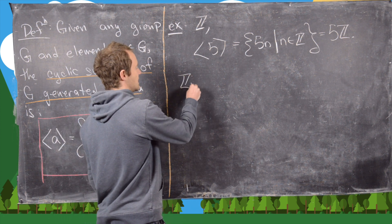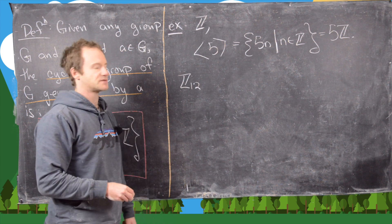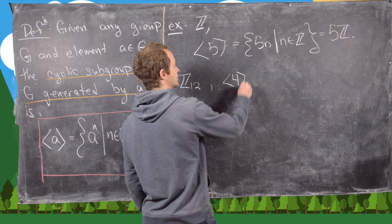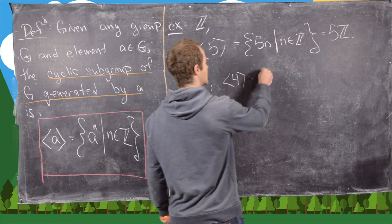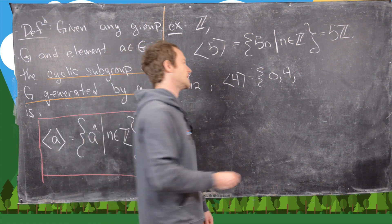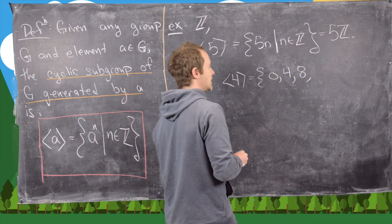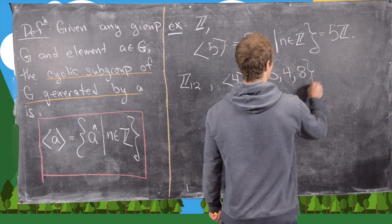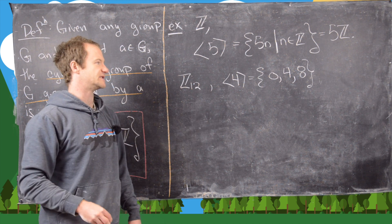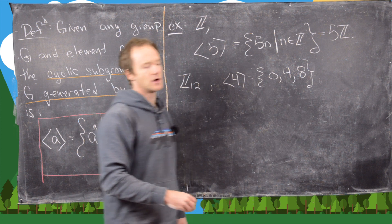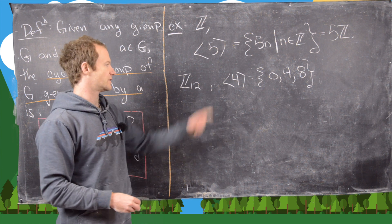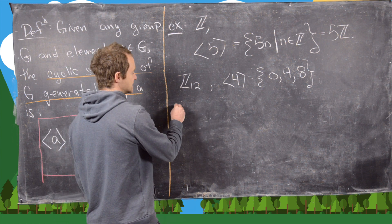Next let's look at z12, the integers modulo 12 with addition, and take the cyclic subgroup generated by 4. That's going to contain 0, 4, then 4 plus 4 equals 8, then 8 plus 4 equals 12 which is 0 in z12. So we just get the subgroup {0, 4, 8}. We can check that's closed under the operation and has inverses, so it is indeed a subgroup.